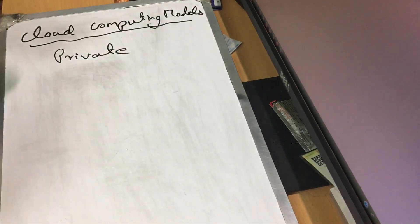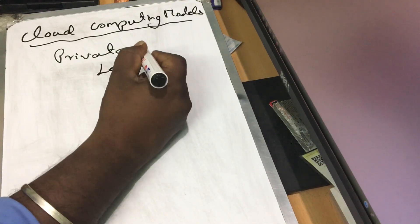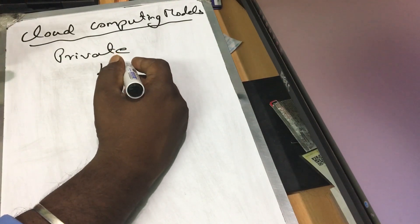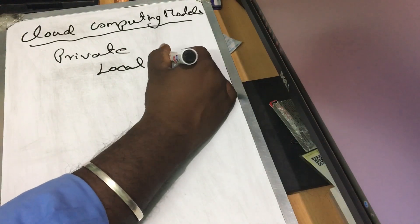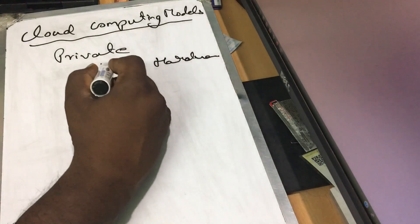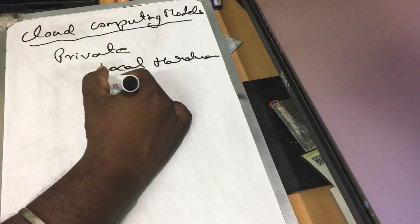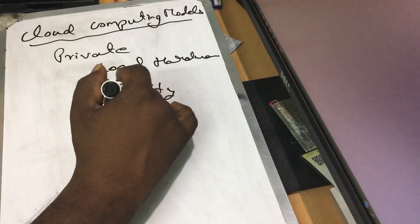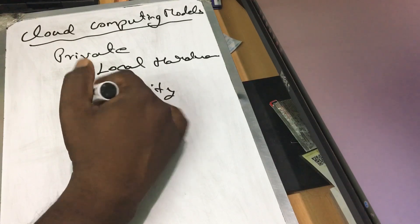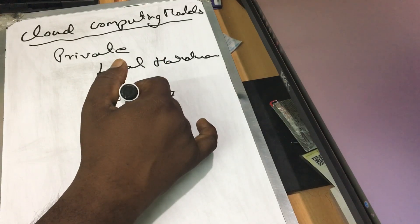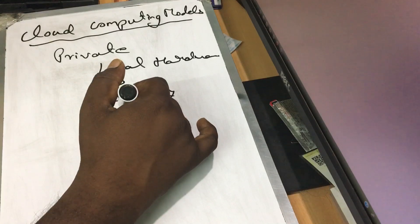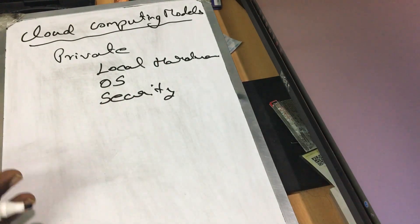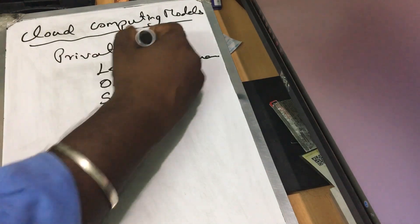If you look at private cloud, you will have a server or a local host. If you have a private cloud, that infrastructure is local. The OS, security, and maintenance are all local. So it is more secure — you have full security. However, it is costly in terms of hardware and software.